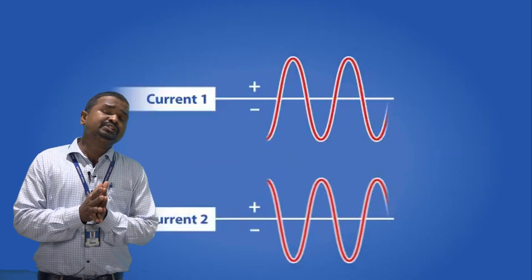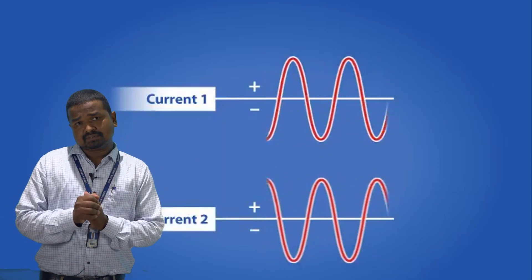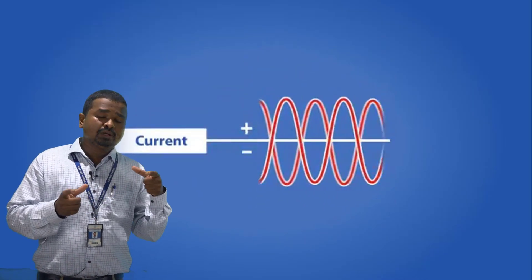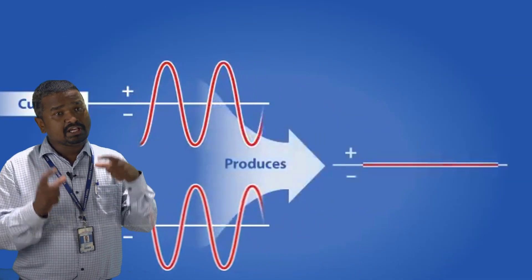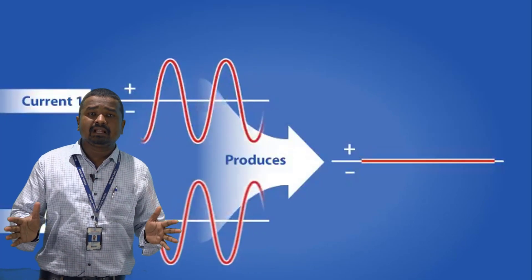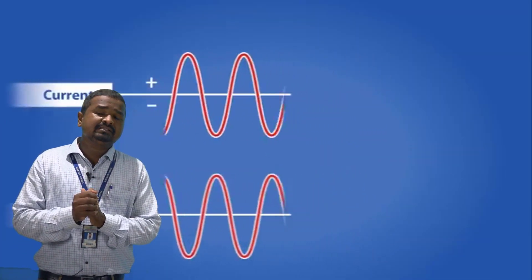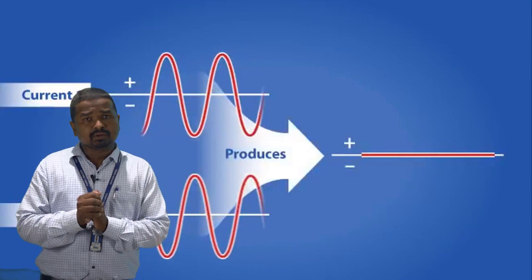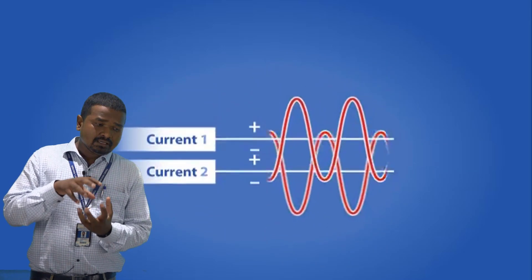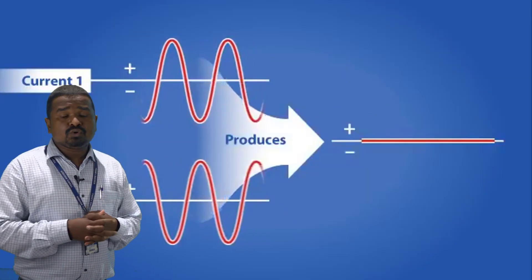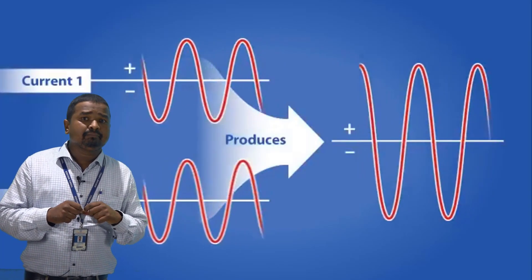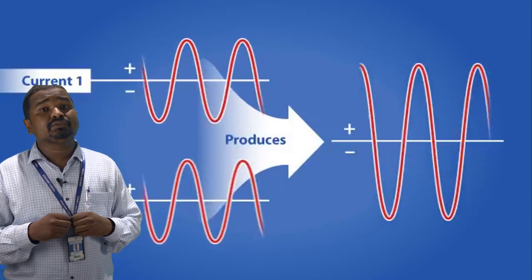In destructive interference, the intensity of light decreases. If the amplitudes of two waves are equal and they meet out of phase, we get zero intensity in the resultant — there is nothing at the resultant. In destructive interference, the crest of one wave is superimposed over the trough of another wave. So when waves are out of phase, we get destructive interference, and when waves are in phase, we get constructive interference.